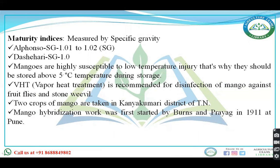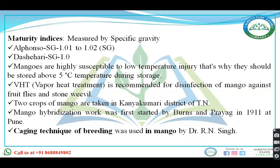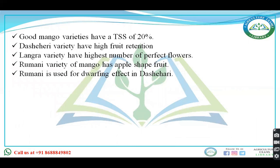Mango hybridization work was first started by Burns and Priyag in 1911 at Pune. The caging technique of breeding that is used in mango was first used by RN Singh, to prevent cross-pollination.